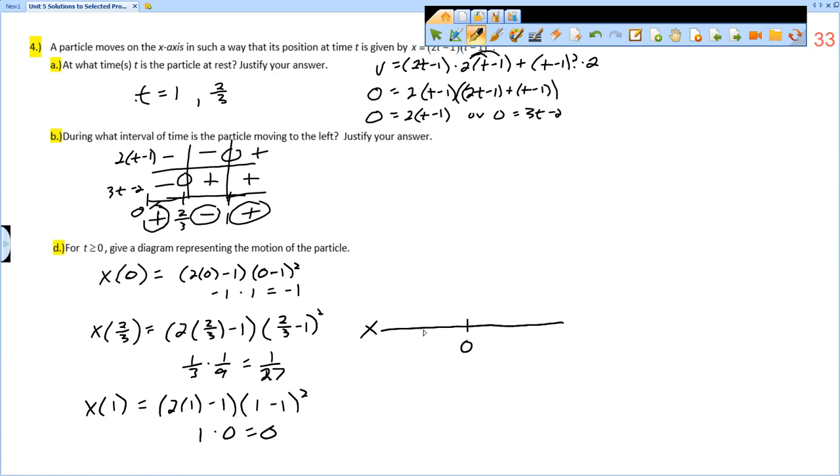Here is our motion diagram. I'm going to put, remember, this is 0, this is x, the x-axis. We're starting at negative 1. Then we're going as far right as 1/27. We're going to start at t equals 0, travel to the right until we get to 1/27. Then we're going to travel back to the left. We travel to the right, this is at t equals 2/3. Then we travel back to the left, and at t equals 1, we get to 0, and then we turn around and travel back to the right forever. That is our motion diagram for problem 4.